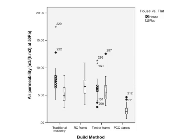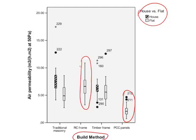This is the box plot that they use. We can see that they're comparing the air permeability for houses and flats, and also for different building methods. One thing we can see straight away is that some of the building methods are only used in flats and not in houses, and we should keep that in mind when making comparisons. For those building methods where both houses and flats are constructed, we can see that the median air permeability is generally a little bit lower for flats than for houses.